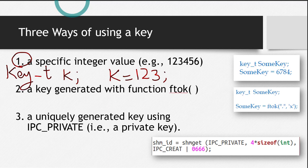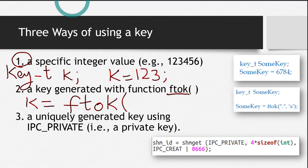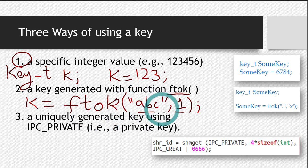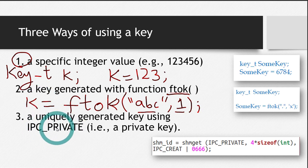The second method to generate a key is through the function ftok(). You write K equals ftok(), and this function takes two arguments: first, a string — you can write any string; and second, any integer, let's say 1. Based on these two parameters, ftok() has an algorithm that will generate a unique key. Whenever these two parameters are kept the same, the key generated will always be the same. So we will use the same set of parameters in both the server and the client so that the key generated is the same. The third method uses the flag IPC_PRIVATE, which generates a private key.